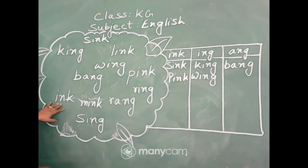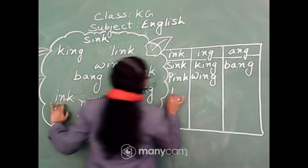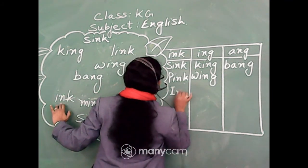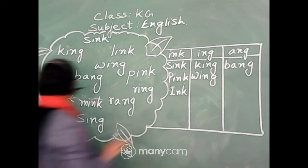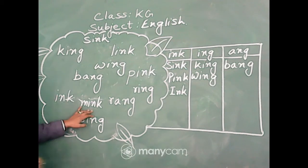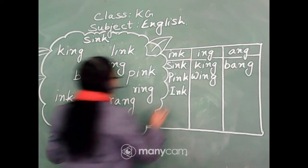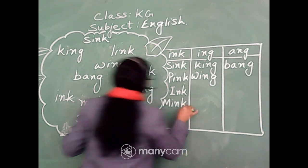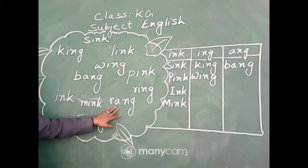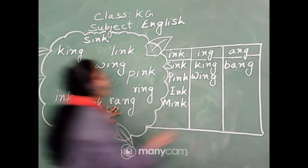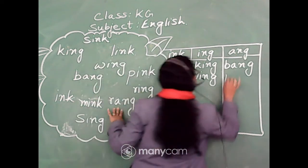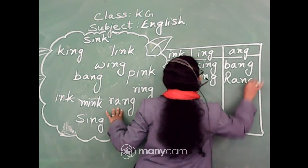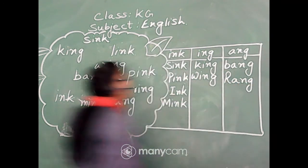Next is ink, i-n-k. Next is mink, m-i-n-k. Then r-a-n-g, rang — so here comes the word rang in the ang column.